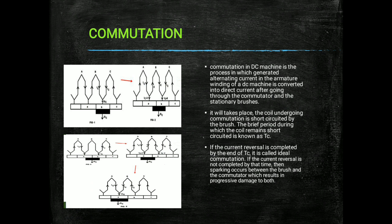There are two conductors along the brush: one on the north pole side and one on the south pole side. The direction of current is opposite in the north pole and south pole sides. At the brush axis, the summation of two currents is obtained, which flows through the brush to the external load circuit — meaning alternating current is converted into direct current. The brief period during which the coil remains short-circuited with the brushes is known as tc, the commutation time. If the current reversal is completed by the end of tc, it is called ideal commutation.